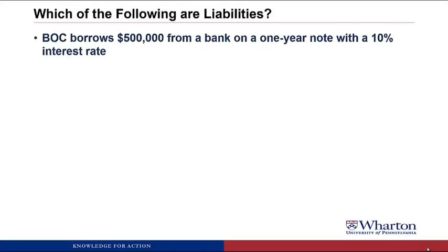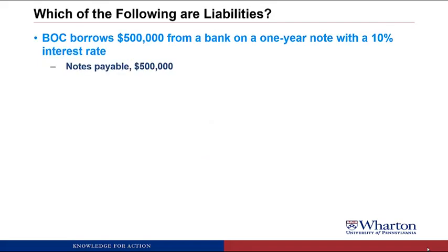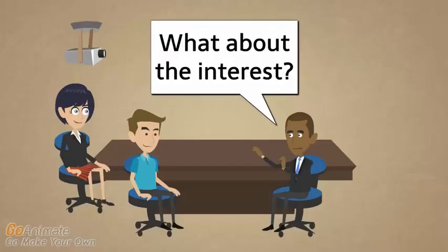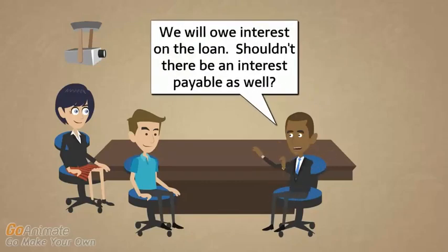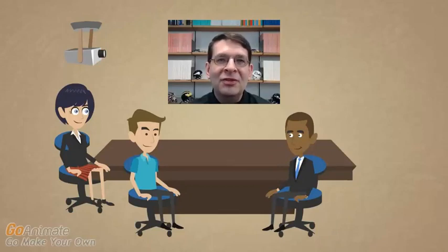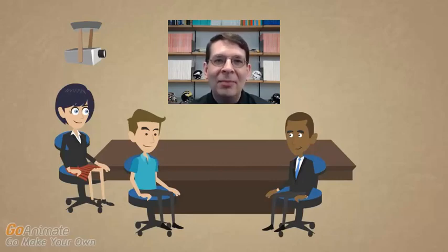BOC borrows $500,000 from a bank on a one-year note with a 10% interest rate. This is a liability called notes payable. It meets the first criteria because we have an obligation based on receiving the benefit of the $500,000 from the bank. The amount owed is reasonably certain at $500,000. As for interest — interest is not a liability at this point because we just took out the loan and could pay it back now without owing interest. Interest only becomes a liability as the money is outstanding over time and remains unpaid.